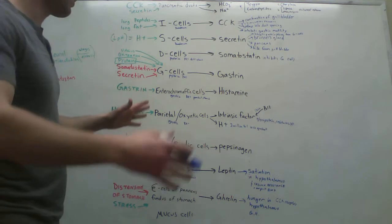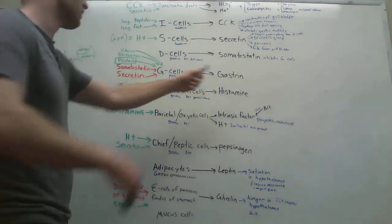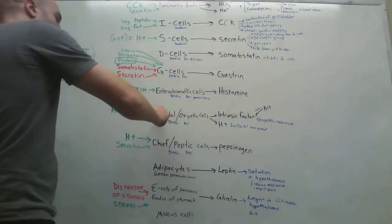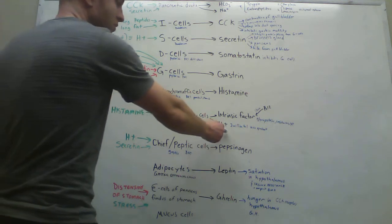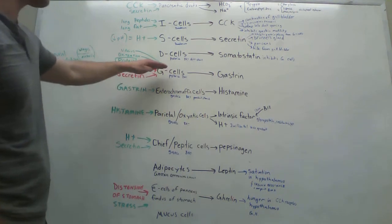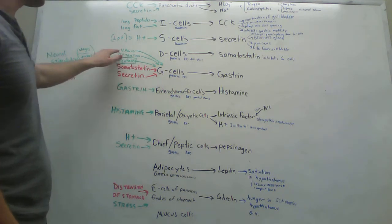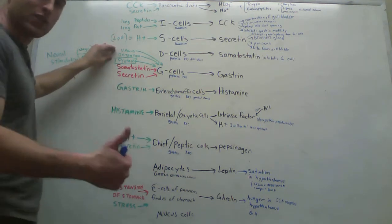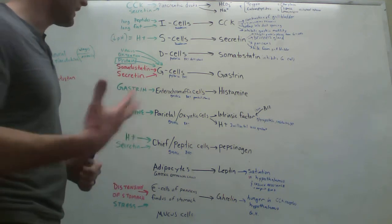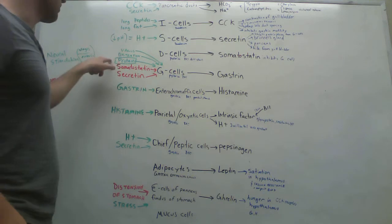G cells release gastrin. Gastrin is a huge thing here that triggers a lot of this whole cascade, because gastrin triggers enterochromaffin cells. Enterochromaffin cells release histamine. Histamine triggers the parietal or oxyntic cells to release hydrogen. And hydrogen triggers the chief peptic cells release pepsinogens. So it's really these G cells that are like almost the center point of all this stuff. So they're inhibited by some things, and they're also stimulated by some things. They're stimulated by excitation from the vagus, also from stomach distension. But most of all, the main thing that's going to excite these G cells to release gastrin is protein.